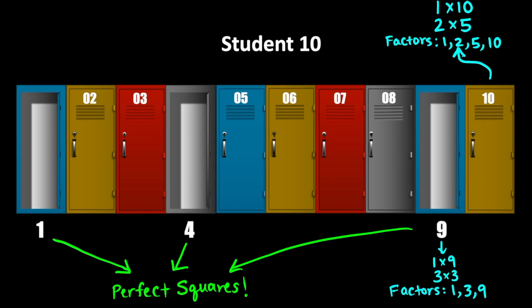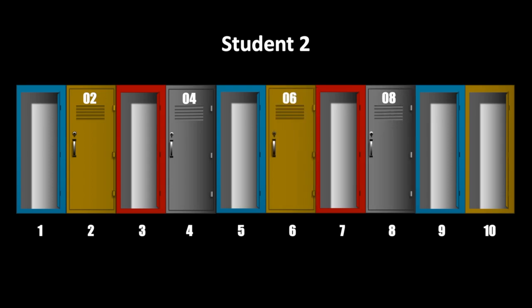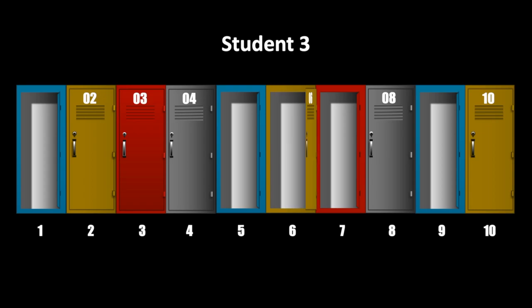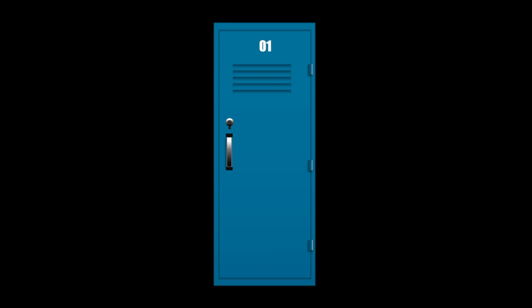Why is this important? Each numbered student only opens or closes lockers that he is a factor of. For example, student 2 will only ever touch lockers divisible by 2, student 3 only lockers divisible by 3, and so on. So a number being a perfect square means it will be affected an odd number of times. It will change from closed to open an odd number of times, ending in the opposite state from where it started. For example, if affected three times, it would go: closed → open → closed → open.